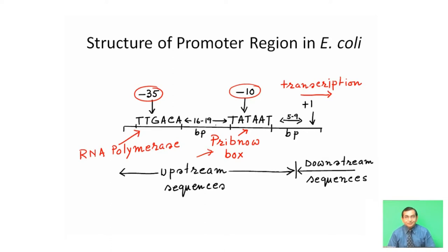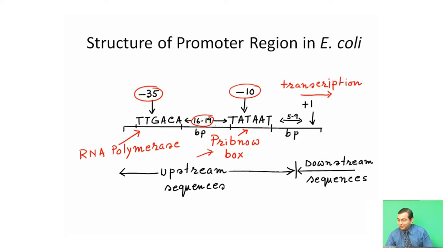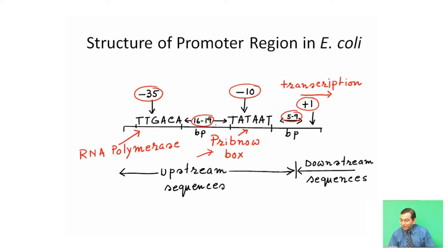The Pribnow box is located 16 to 19 base pairs away from the minus 35 sequence. From the Pribnow box, transcription initiates at a distance of 5 to 9 base pairs. This transcription starts at a position designated as plus 1. Sequences preceding plus 1 are called upstream sequences, while sequences following plus 1 are called downstream sequences.